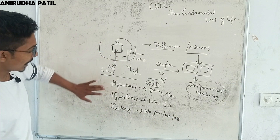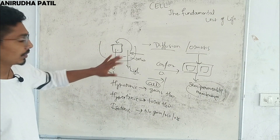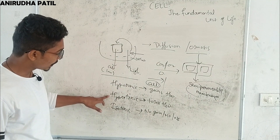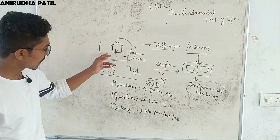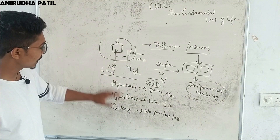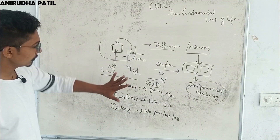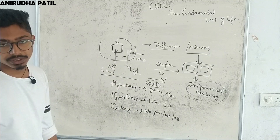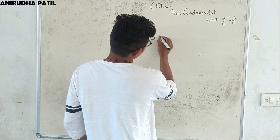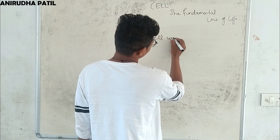The third case is when the concentration of water in both the cell and the medium are equal — that solution is known as isotonic. In isotonic solution there is no gain and no loss of water. To summarize: hypotonic — cell gains water; hypertonic — cell loses water; isotonic — no change.